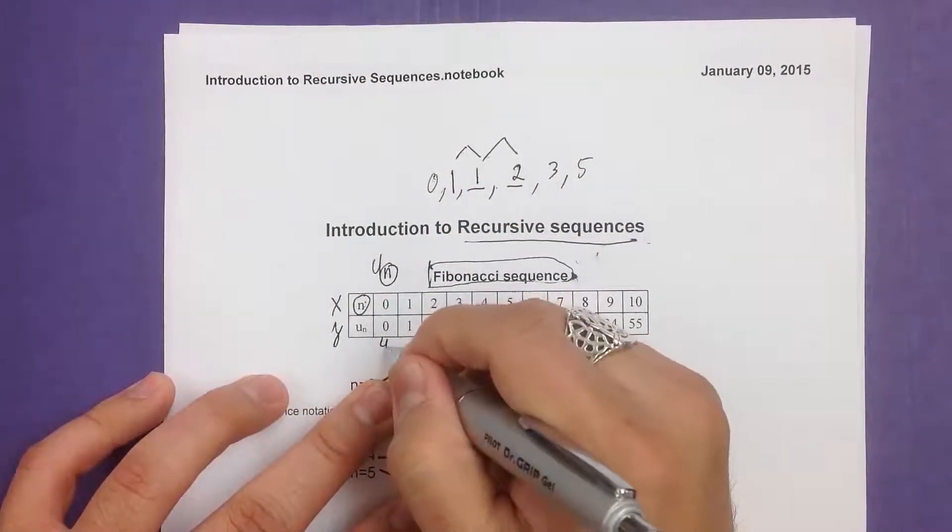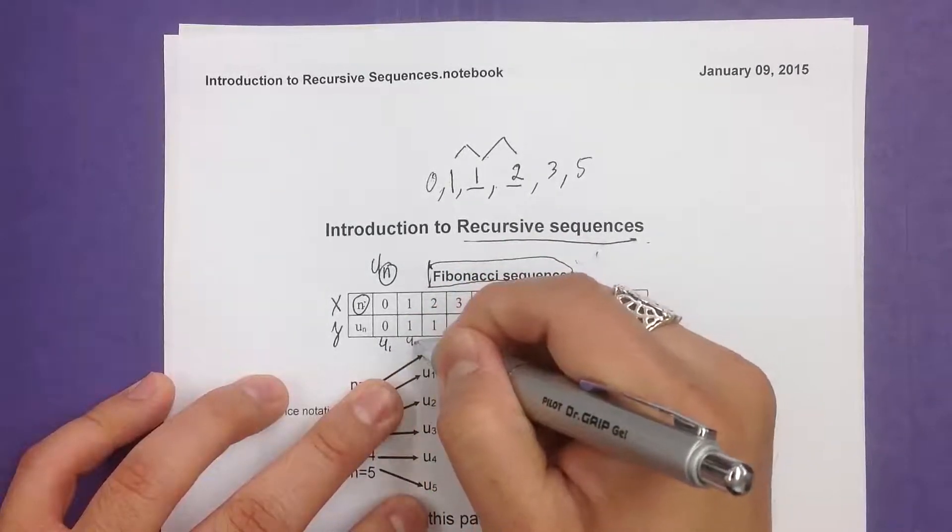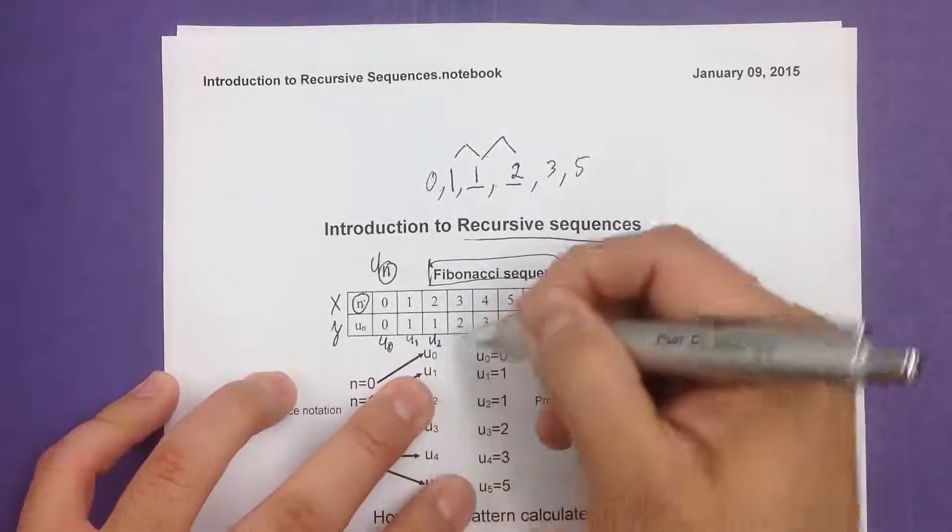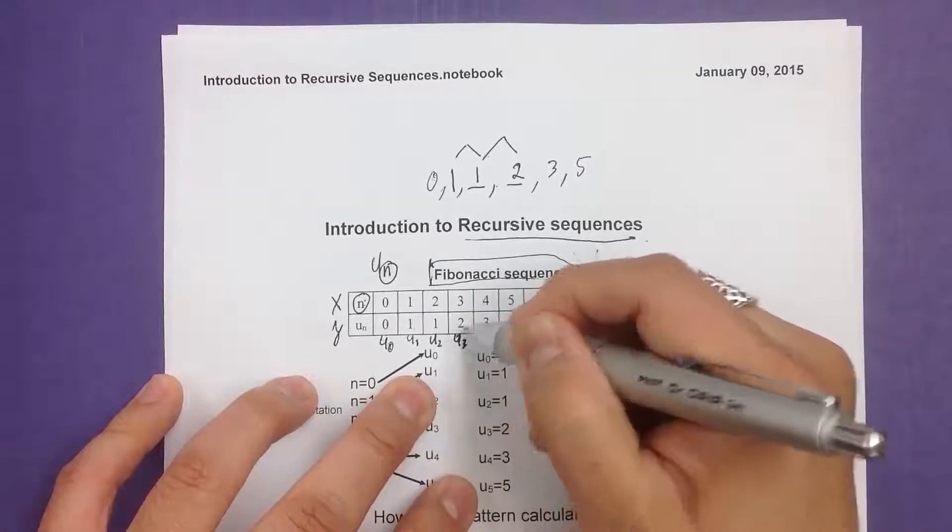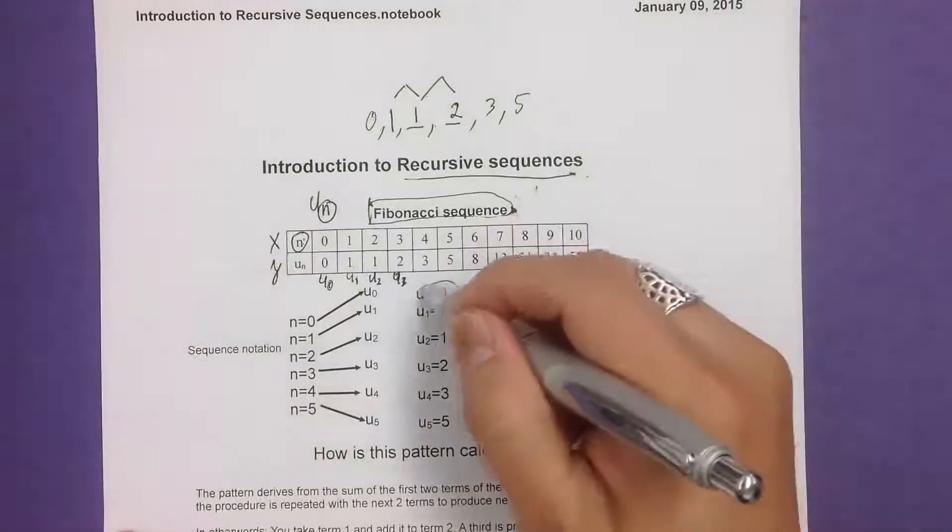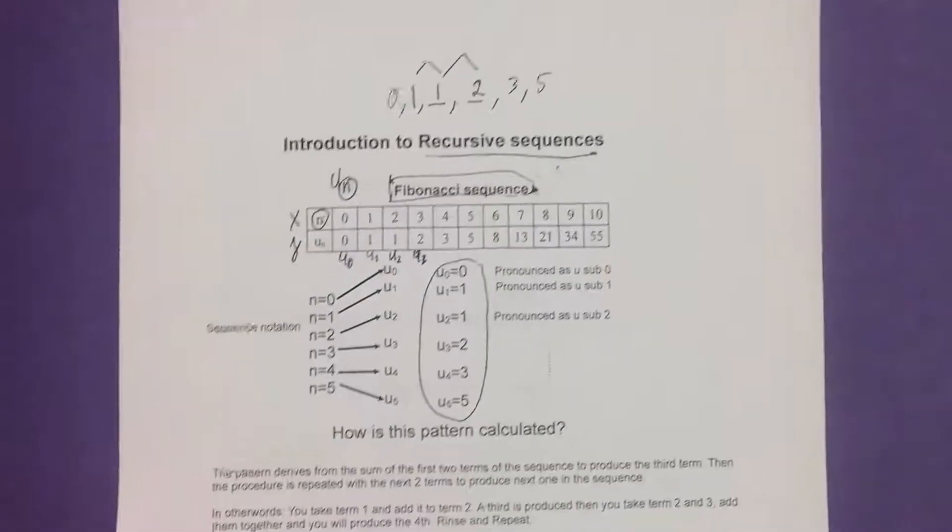So this represents u sub 1, which is equal to 0. Actually, u sub 0 is equal to 0, u sub 1 is equal to 1, u sub 2 is equal to 1, u sub 3 is equal to 2, and we just keep on going. And actually I have it right here. u sub 0 is equal to 0, and we just keep on going with that one.